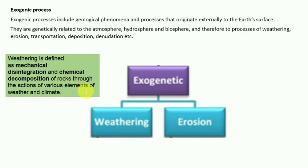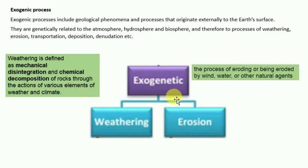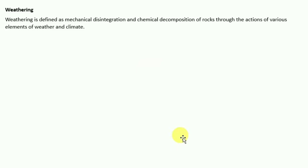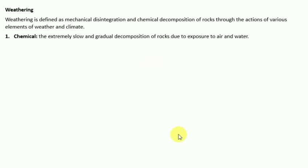Erosion is the process of eroding or being eroded by wind, water, or other natural agents. In weathering there are three types: physical, chemical, and biological. Chemical weathering plays a very important role in weathering change — it involves the extremely slow and gradual decomposition of rock due to exposure to air and water.